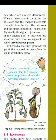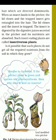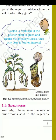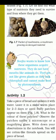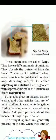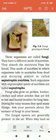Then write about insectivorous plants: insect-eating plants are called insectivorous plants. Draw the diagram of the pitcher plant showing the lid. Then write about saprotrophs — the mode of nutrition in which organisms take nutrients from dead and decaying matter is called saprotrophic nutrition. Such organisms with saprotrophic mode of nutrition are called saprotrophs. Example: fungi.